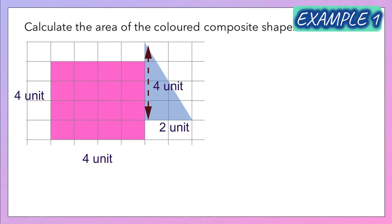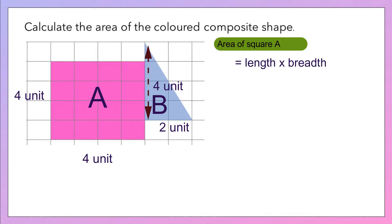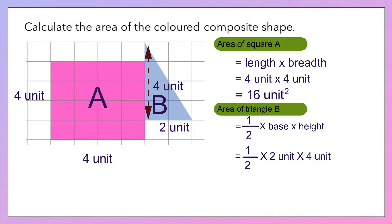Look at this diagram. We have a square A and a triangle B. Area of the square equals 4 units multiplied by 4 units, that will be 16 square units. Area of right angle triangle B equals half multiplied by 2 units multiplied by 4 units, that will be 4 square units.